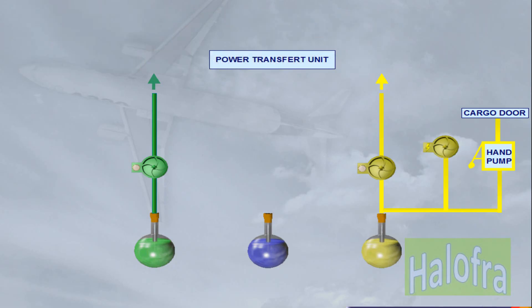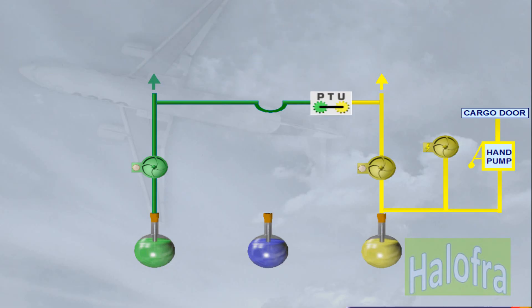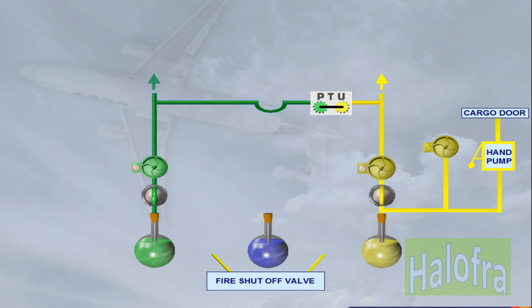A power transfer unit, PTU, enables the green and yellow systems to pressurize each other automatically. Fire shut-off valves are located between the reservoirs and the engine-driven pumps, and are controlled by the engine-fire push-button switches.